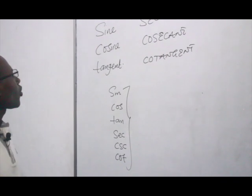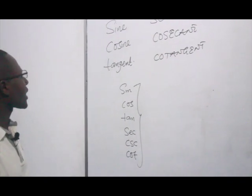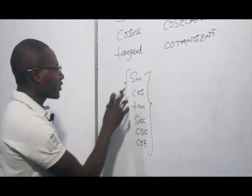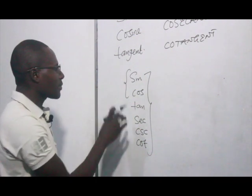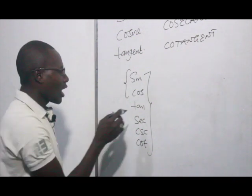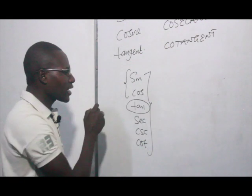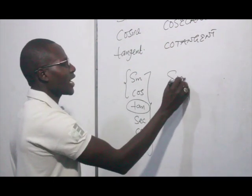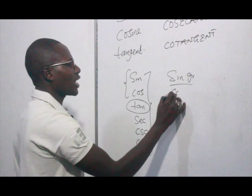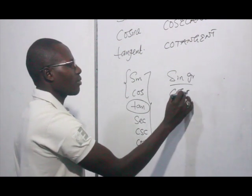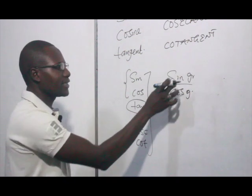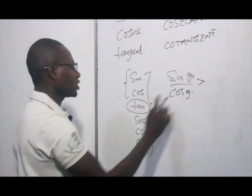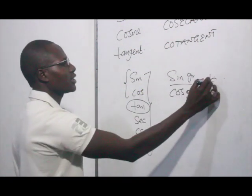But in this class, we will look at the graph of sine and cosine — the sine graph and the cosine graph. However, the tangent graph is the ratio of a sine graph and the cosine graph. So when you divide the sine by the cosine, you will eventually end up having the tangent.